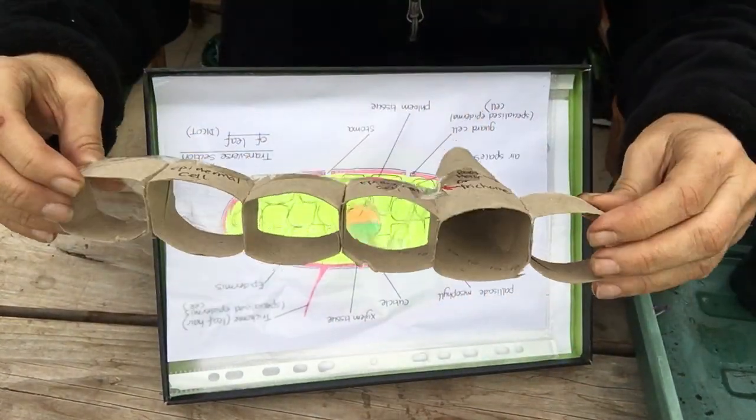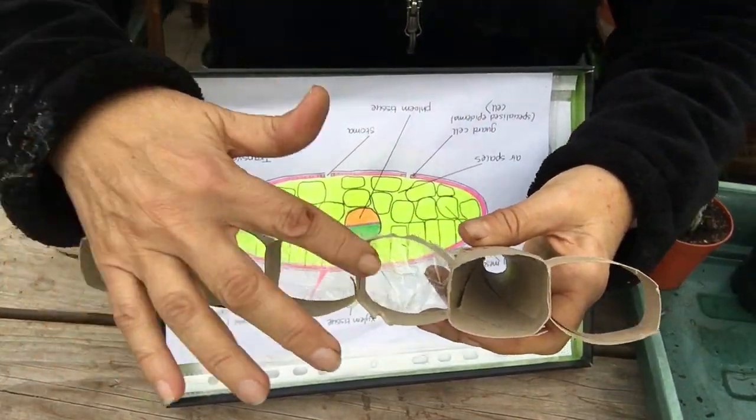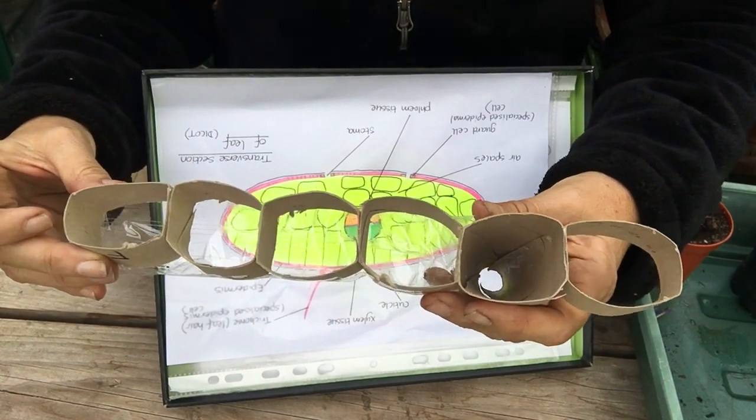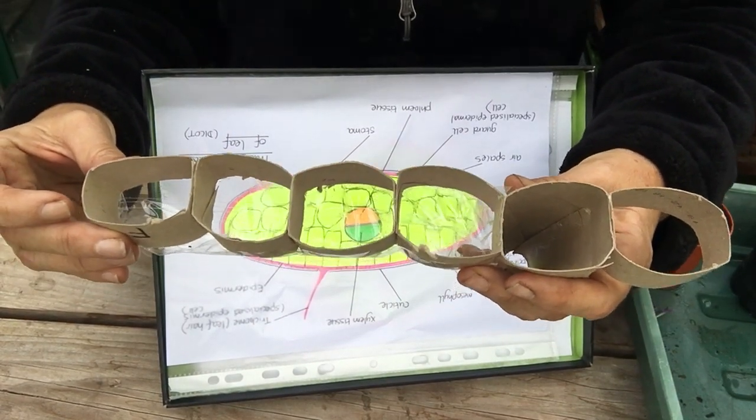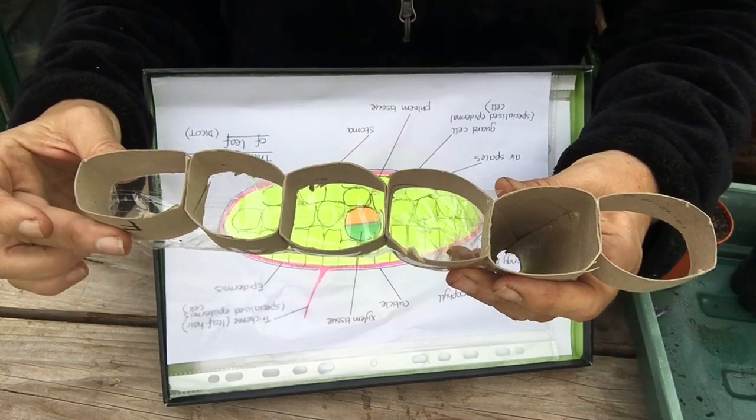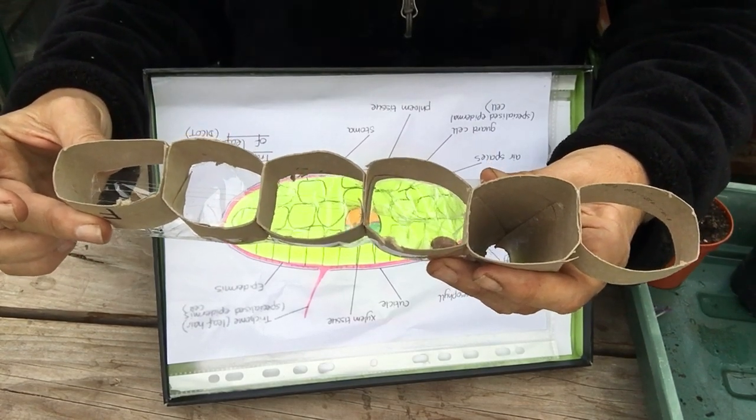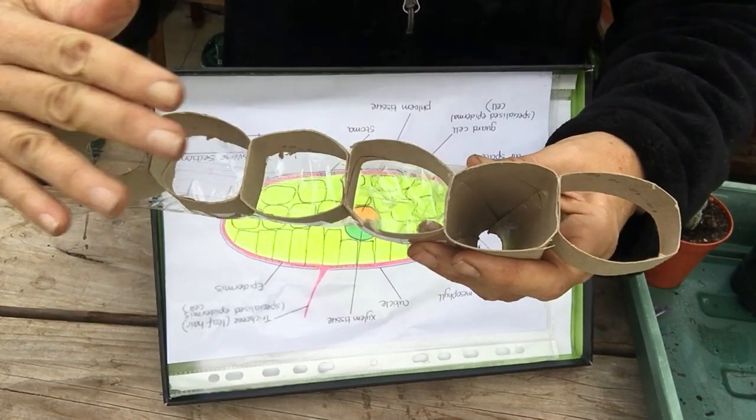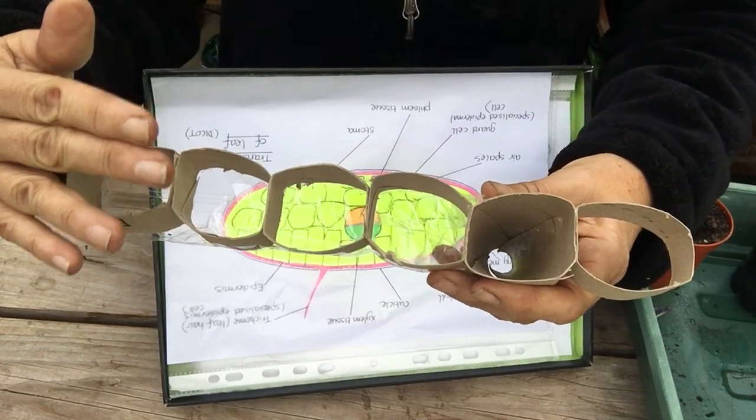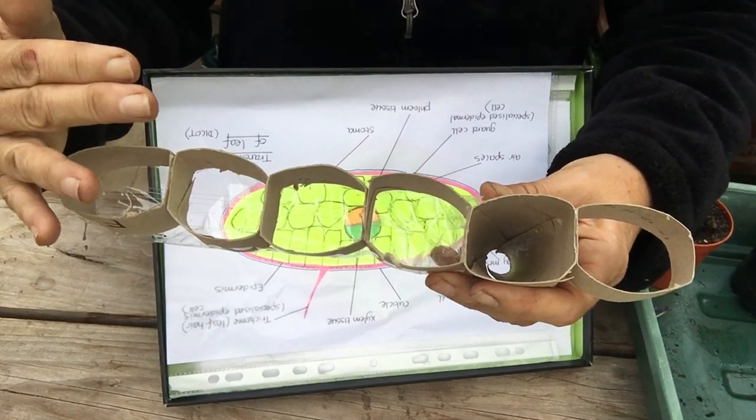So let's have a look at the cells. They're tightly packed with no air spaces between so that's to stop predators like aphids piercing them or things eating them, and also tightly packed to prevent water loss especially from the leaf surface.